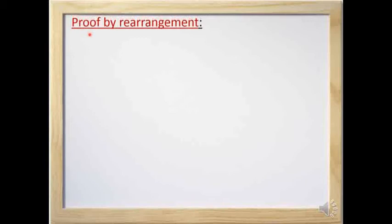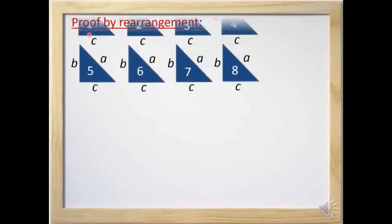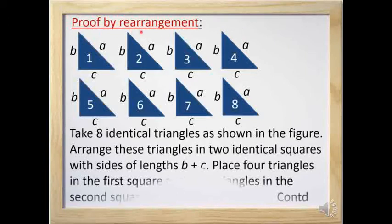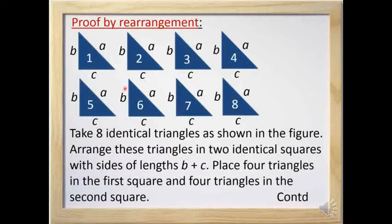There are nearly 350 ways to prove the Pythagoras property. Here I am going to prove it by rearrangement. For this, I am going to take eight identical right angle triangles and two identical squares of side (b + c).